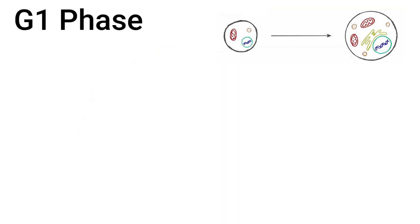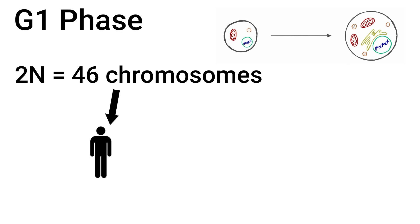Let's start with the G1 phase, where the cells enter the cell cycle. At this stage, the DNA content of the cell is 2N, so 46 chromosomes. 23 of these come from the male parent, and the other 23 come from the female parent. So it is 2N, which is why it is called a diploid cell.